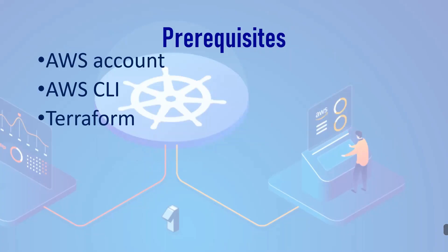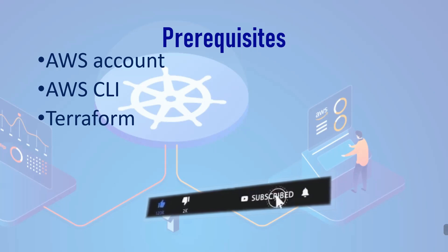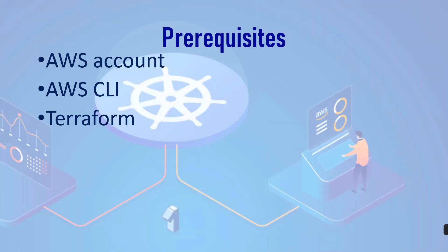Before we begin, let's quickly go over the process for the tutorial. First, you need an AWS account with appropriate permissions to create resources like an EKS cluster. Make sure you have your access key and the secret access key. Next, you need an AWS CLI installation on your machine.